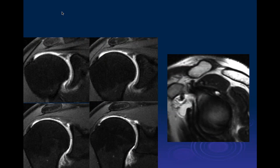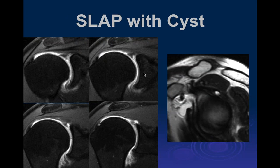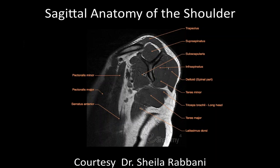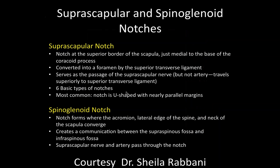Here we can see a SLAP tear, but we've already looked at SLAP tears so we don't need to revisit those. You're all familiar with the anatomy around the shoulder. One of the areas we'll be concerned about is down here in the axillary recess.